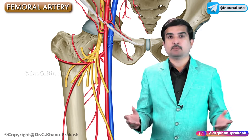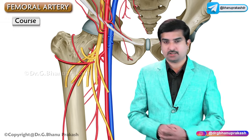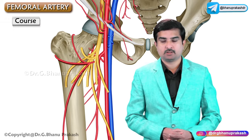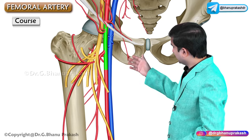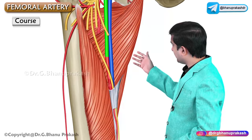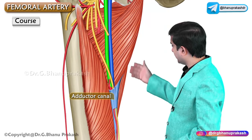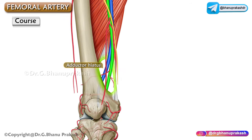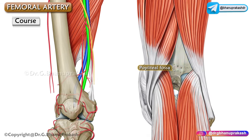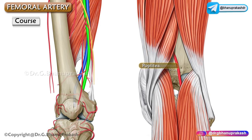Now let us discuss the course of the femoral artery. It descends downwards and medially through the femoral triangle and the adductor canal, enters the adductor hiatus, and then exits into the popliteal fossa on the posterior surface of the knee as the popliteal artery.